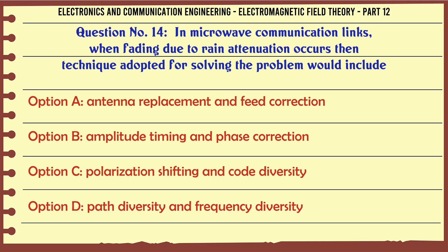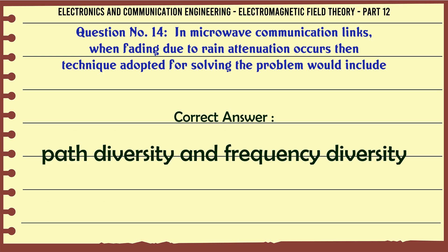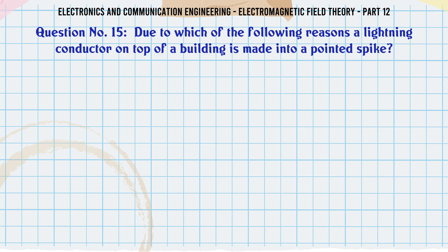In microwave communication links, when fading due to rain attenuation occurs, the technique adopted for solving the problem would include: A. Antenna replacement and feed correction, B. Amplitude timing and phase correction, C. Polarization shifting and code diversity, D. Path diversity and frequency diversity. The correct answer is Path diversity and frequency diversity.